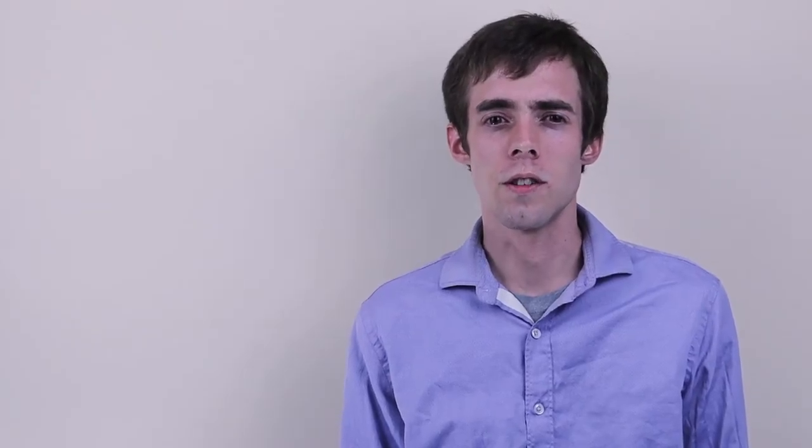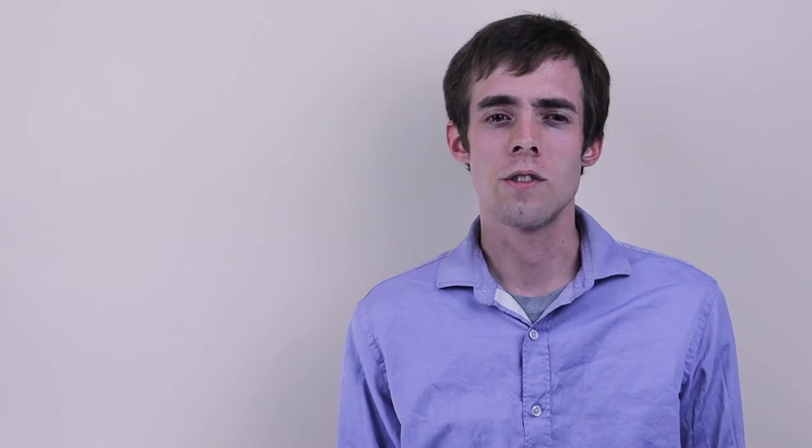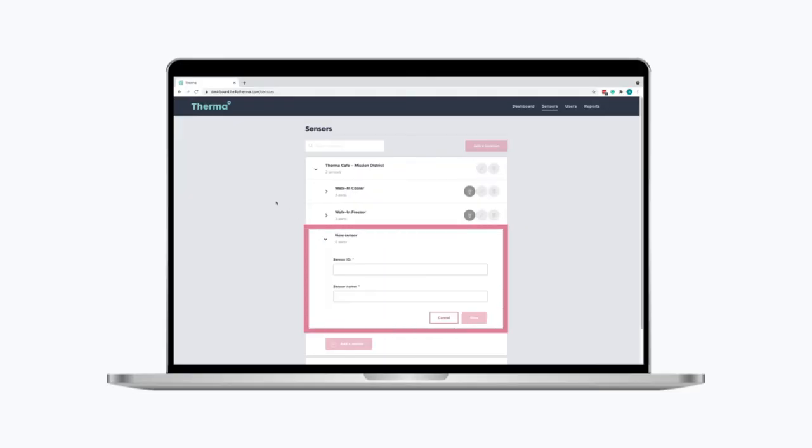You can also type the serial number listed on the front of the sensor which follows the letters SN. Finally, choose a location and tap save. You can also add sensors to your account using the Therma dashboard at dashboard.hellotherma.com.